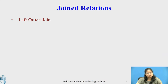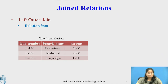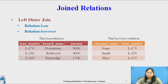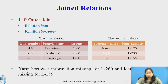Consider the relations for the queries on left outer join. Relation loan has attributes loan number, branch name, and amount. Relation borrower has attributes customer name and loan number. In both relations, the common attribute is loan number. Borrower information is missing for L260 in the borrower relation, and loan information is missing for L155 in the loan relation.